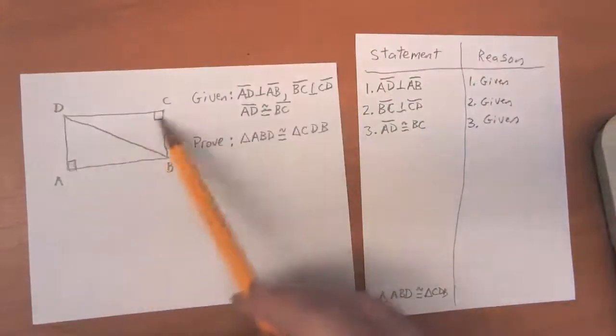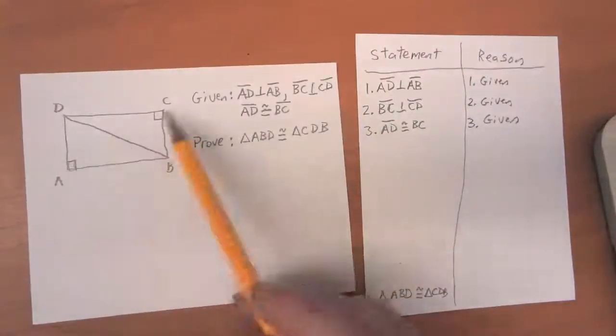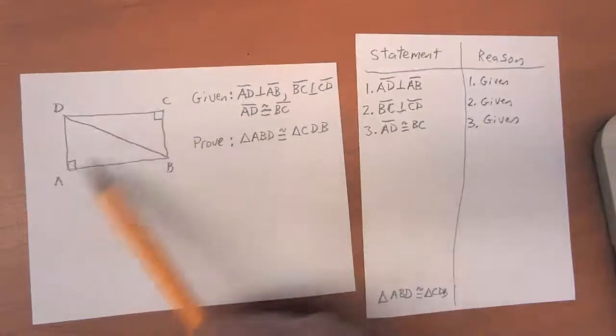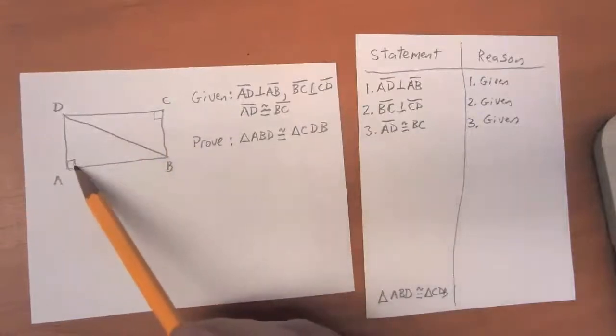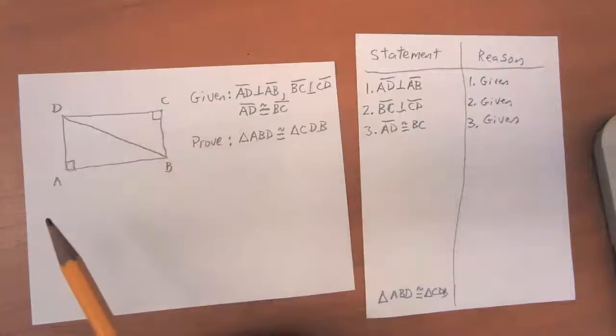Since I've got these perpendicular sides, since I know these right angles are in the diagram, I can conclude how big is a right angle?